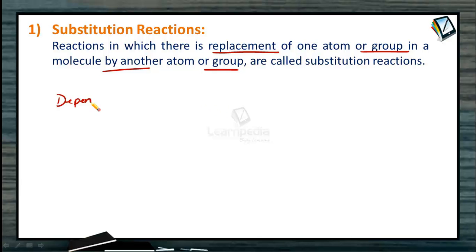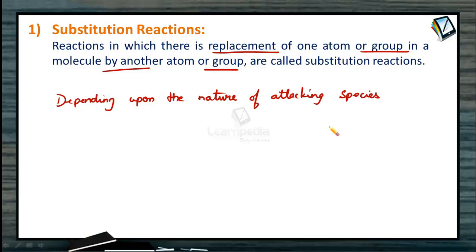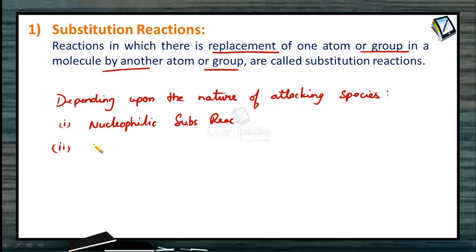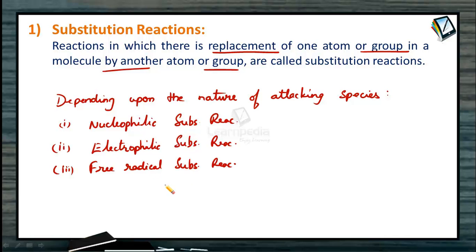Depending upon the nature of the attacking species, substitution reactions are divided into three types: nucleophilic substitution reactions, electrophilic substitution reactions, and free radical substitution reactions. All three reactions along with their mechanisms are very, very important.